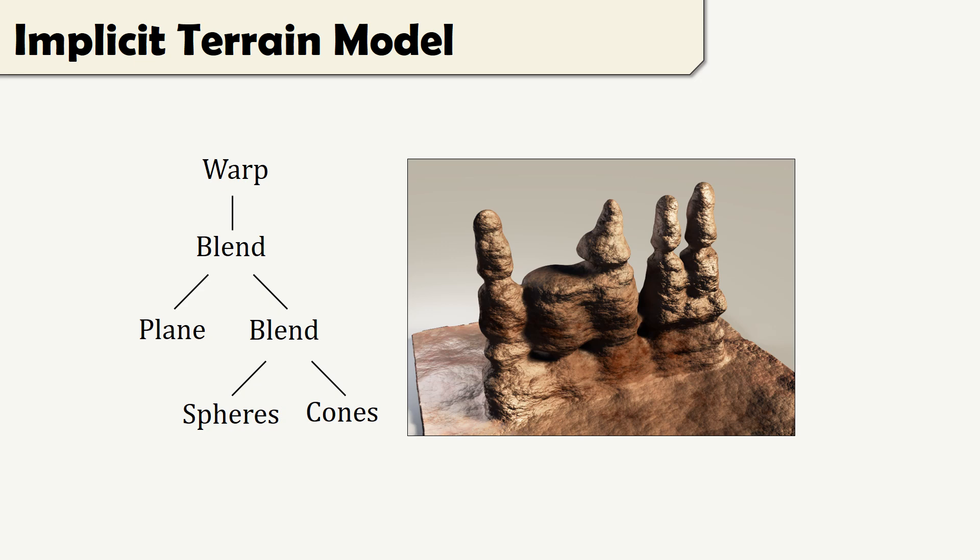The actual surface of the terrain is also encoded as an implicit tree model. Primitives can be skeletal or derived from a height field or special complex skeletal sculpting primitives that use noise displacements. Operators include blending and warping.